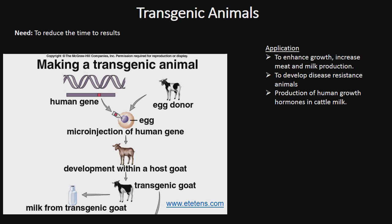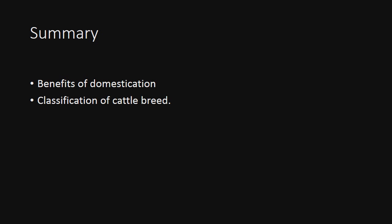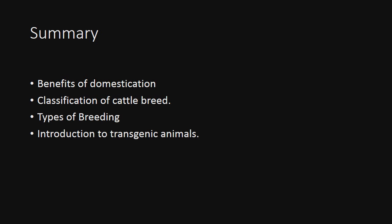To summarize, we have covered the benefits of domestication, classification of cattle breeds, types of breeding, and an introduction to transgenic animals.